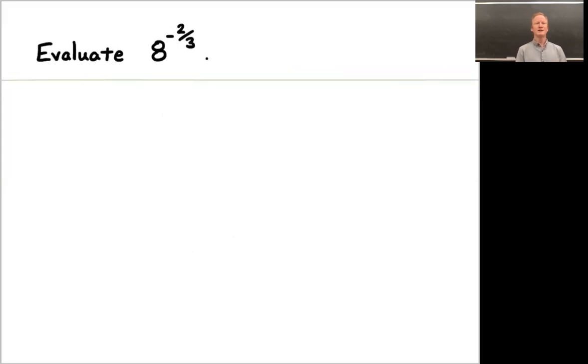Evaluate 8 to the minus 2 thirds. Now, in some sense, 8 to the minus 2 thirds is a perfectly good number. That's a precise number. The problem here is to be able to write that number in a more familiar form, a form that doesn't require exponents. So I'll give you a moment to evaluate that, and when you're finished, unpause the video and we'll talk about the solution.